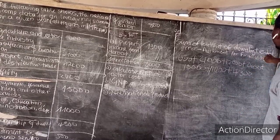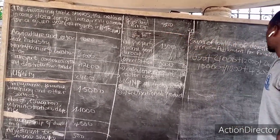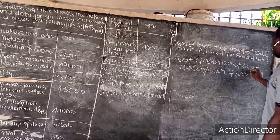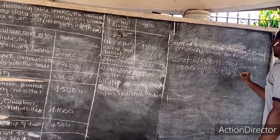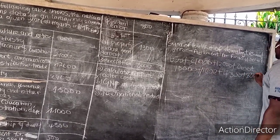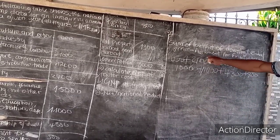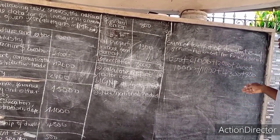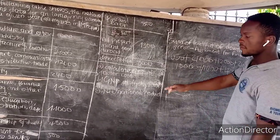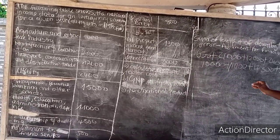Then we handle the residual error: since it is plus or minus, and the residual error is 800, we add plus 800. Finally, we subtract the adjustment for financial savings, which is 500, so we minus 500.